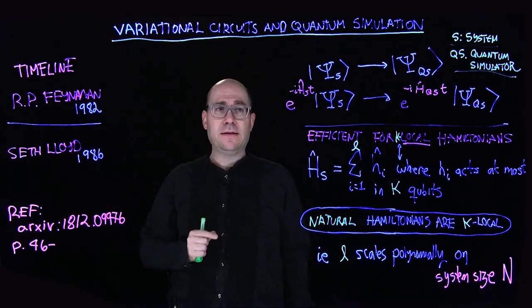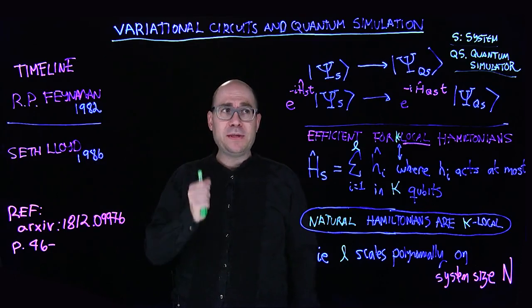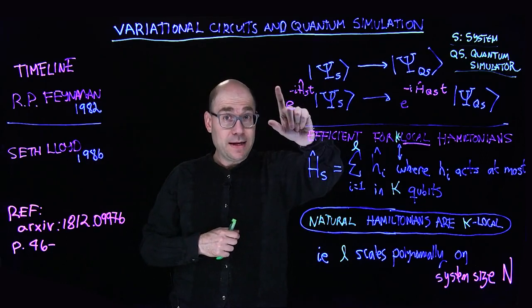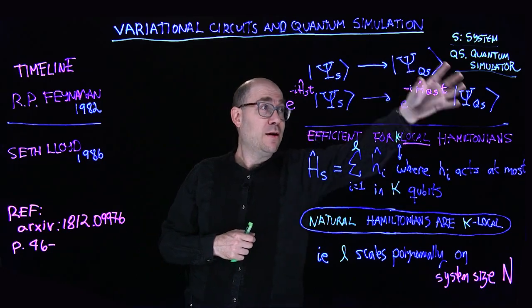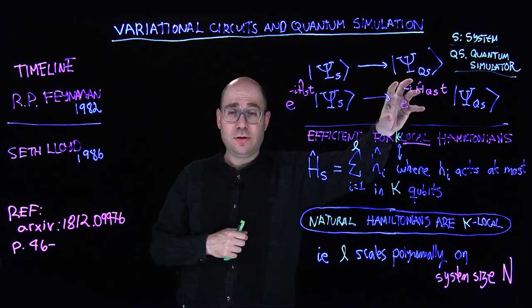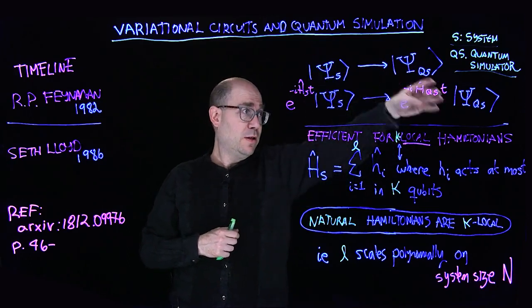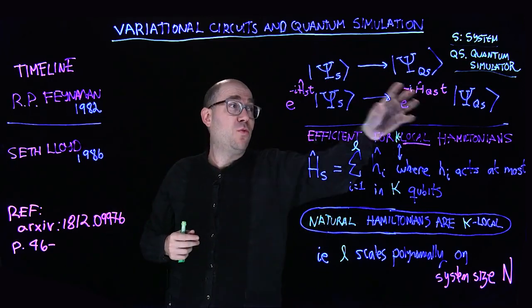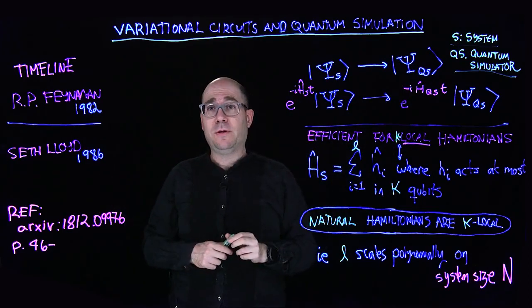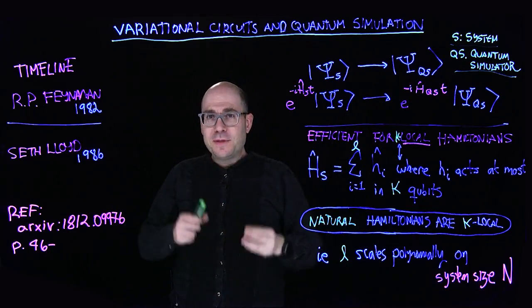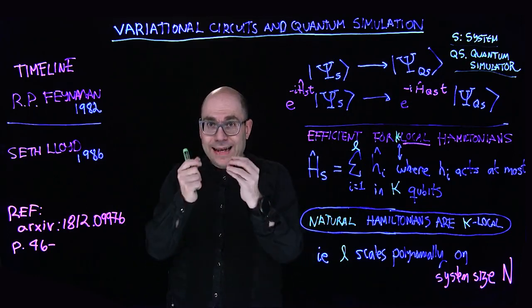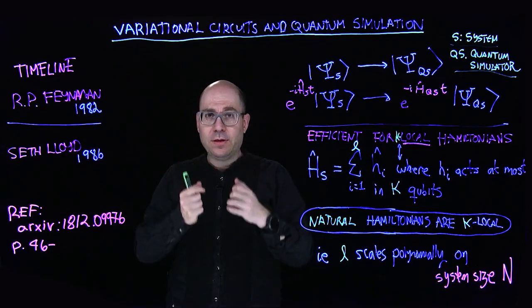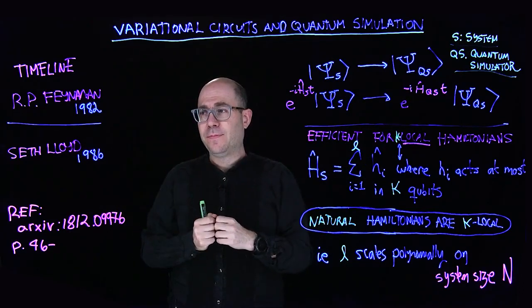So Feynman's key insight is that any observable obtained on this side of the equations will be equivalent to any observable obtained on this side of the equations. Because after all, these quantum states would be indistinguishable from each other and the evolution as well would be to some tolerance indistinguishable. So in some sense he had the intuition that if you want to simulate the dynamics of a quantum system, why not exploit the natural quantum dynamical evolution.